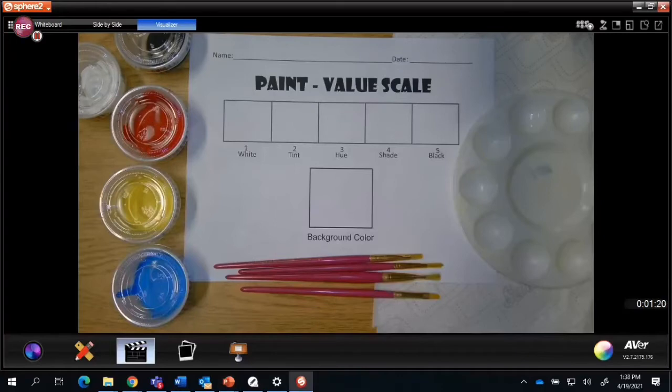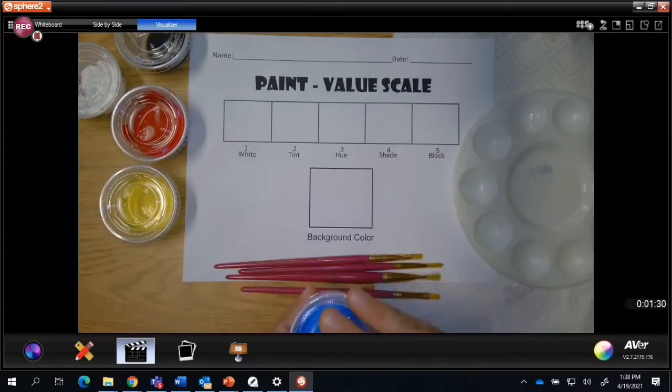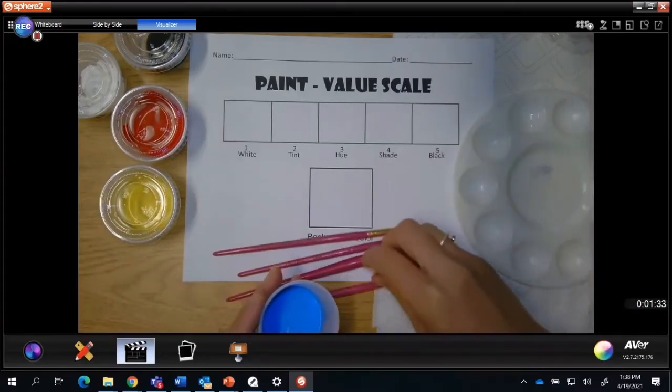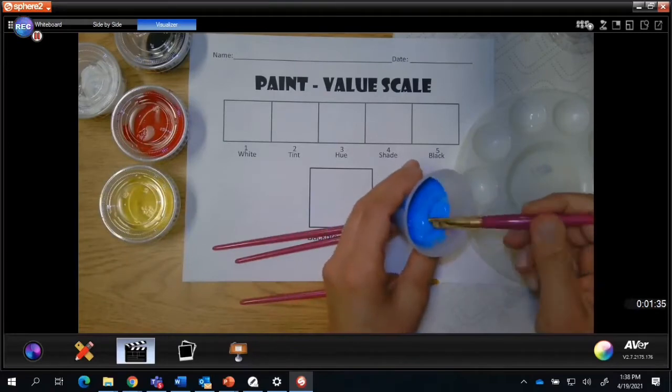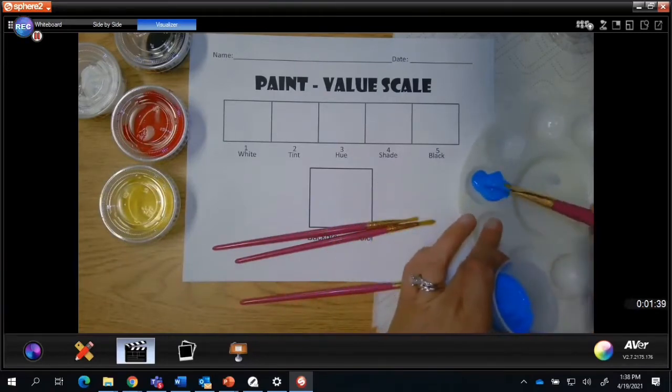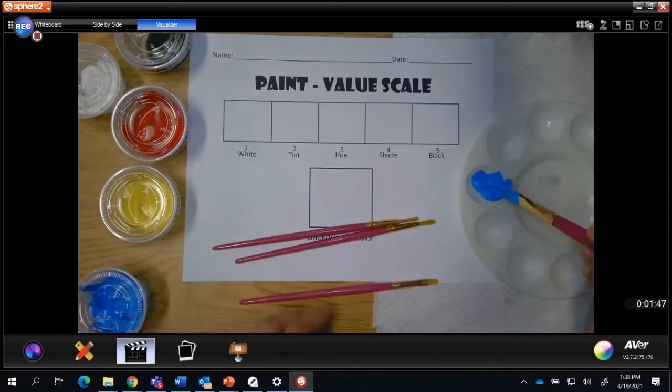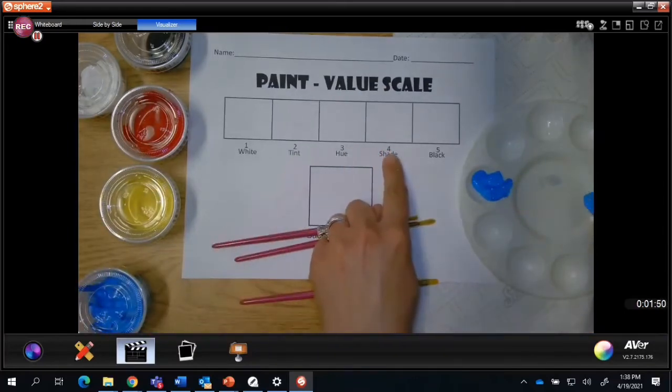The first thing I want to do is mix my number three value. Because I'm using a color that doesn't come straight from the bottle, I'm going to need to pre-mix my number three value. To mix my blue violet, I'm going to start with blue because that's the lighter color, and I'm going to mix a decent amount so I'll have enough to make my hue, which is my number three, and I'll also be able to use some of that to mix my tint and my shade.